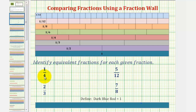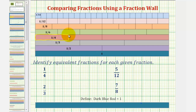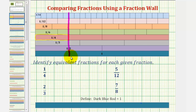To find the equivalent fractions shown in the fraction wall for one-fourth, we begin by identifying the one-fourth rod. Any train of rods or sequence of rods that have the same length as the one-fourth rod would give us an equivalent fraction.